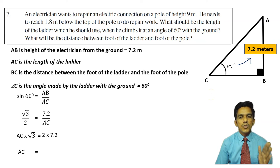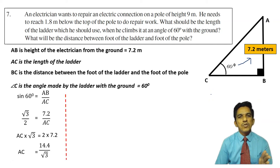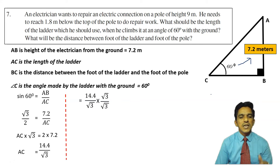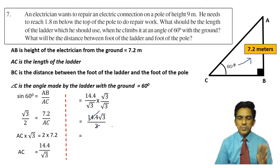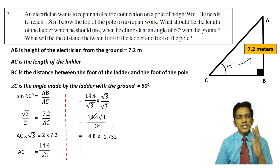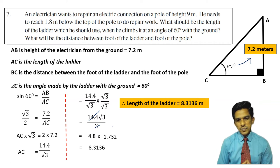Let us take sine 60. Sine is opposite by hypotenuse: AB by AC. Sine 60 is root 3 by 2. So root 3 by 2 is equal to 7.2 by AC. Cross multiply: AC into root 3 is equal to 2 into 7.2, which is 14.4. So AC is equal to 14.4 divided by root 3. Rationalize: multiply by root 3 over root 3. You get 14.4 root 3 by 3, which is 4.8 root 3. Root 3 is 1.732, so 4.8 into 1.732 is 8.3136. Therefore the length of the ladder is 8.3136 meters.